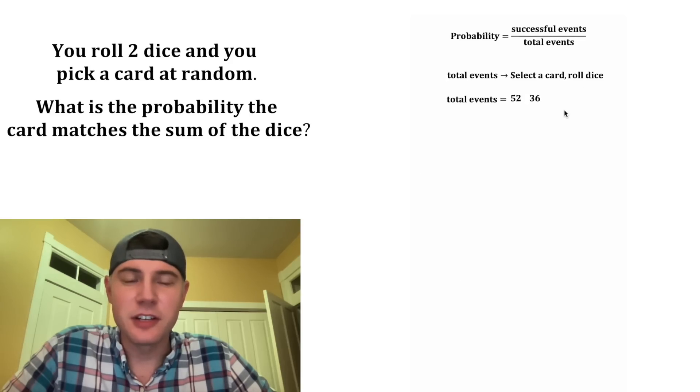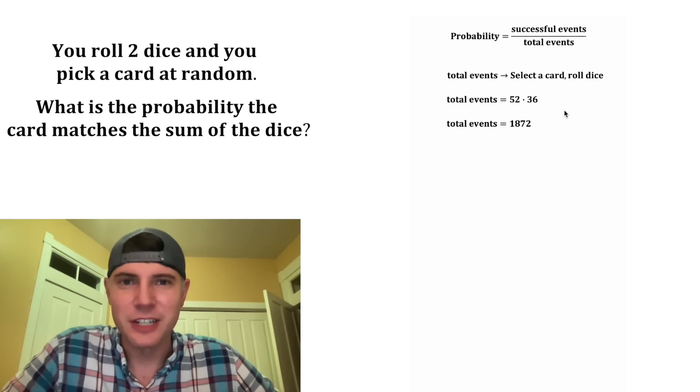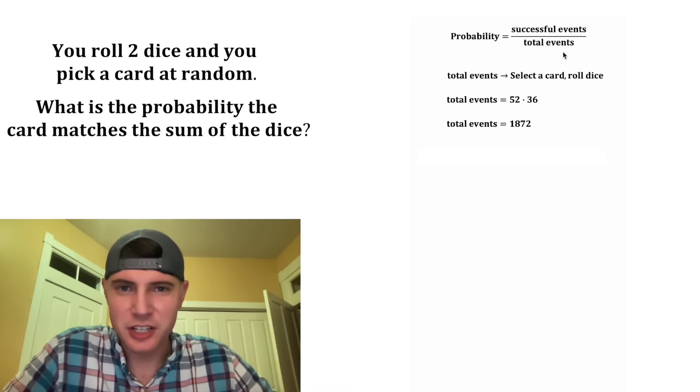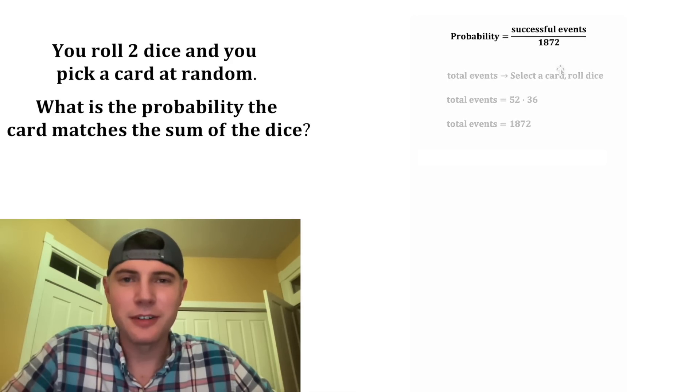So that means the total number of events is going to be 52 times 36, which is equal to 1,872. So that is the total possible events in this game. We can change this to 1,872.